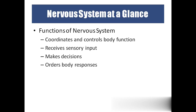The nervous system will receive sensory input. According to that sensory input, we take decisions and our body will respond. Sometimes the decisions will be taken by ourselves — which is voluntary. Sometimes the decisions will be taken by the body itself — which we call involuntary.